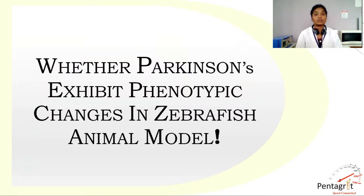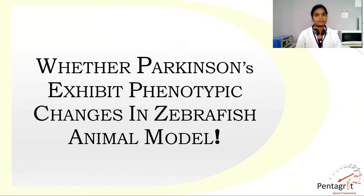Parkinson's disease is a slowly progressive, second most common neurodegenerative disease after Alzheimer's. It is associated with the degeneration of the basal ganglia of the brain and the deficiency of the neurotransmitter dopamine. As Parkinson's is a chronic and progressive disease, the degree of disability varies among affected persons. It is also known as paralysis agitans and shaking palsy.